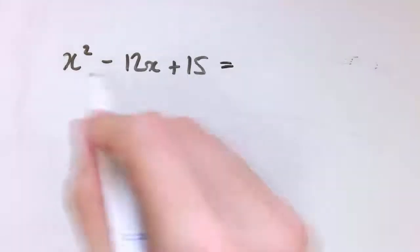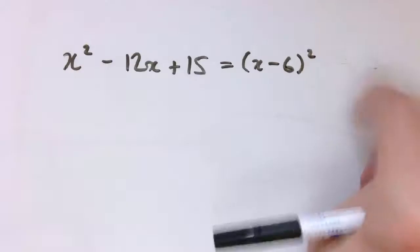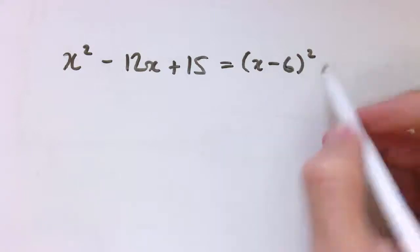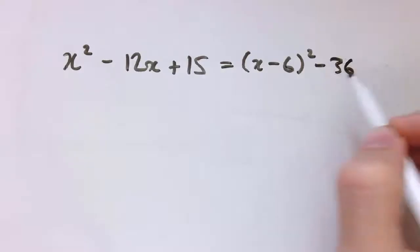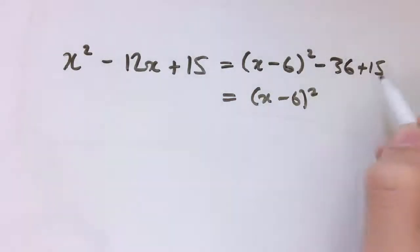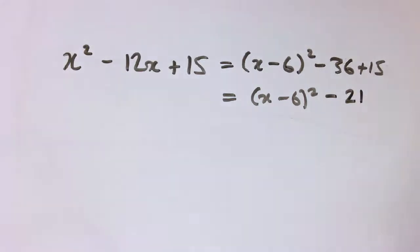It's quite easy once you get the hang of them. Half the minus 12, so that's x - 6 squared. The thing that we're taking off all the time is always this number squared. So it's just minus 36, and then my plus 15. So I get x - 6 squared minus 36 plus 15, so minus 21.